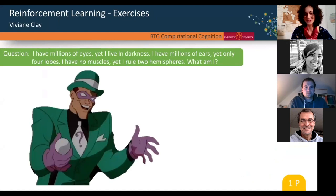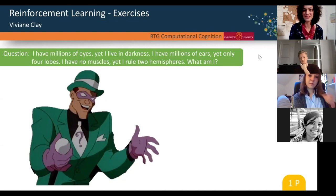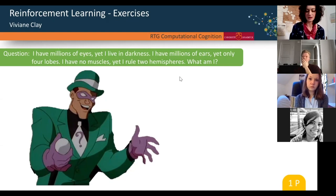It's just a little test question because I didn't talk about anything yet, so maybe some of you got it but maybe not. The question was: I have a million eyes yet I live in darkness. I have millions of ears yet only four lobes. I have no muscles yet I rule two hemispheres. What am I? For the next questions, I unfortunately can't share my screen in the breakout room, so maybe you can just copy it down or take a quick screenshot to remember it. It would be good if you go into the breakout rooms to discuss the question with your team and then decide on an answer.